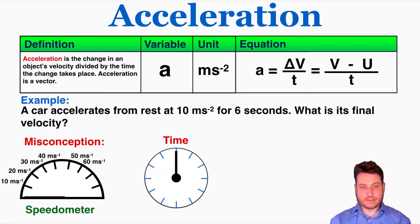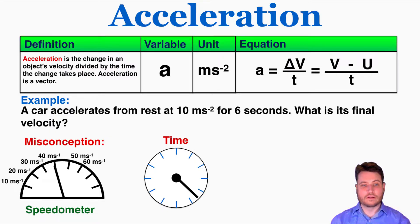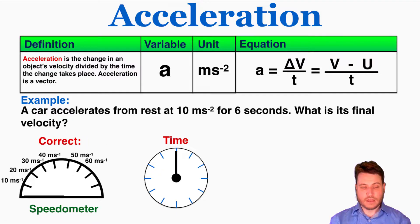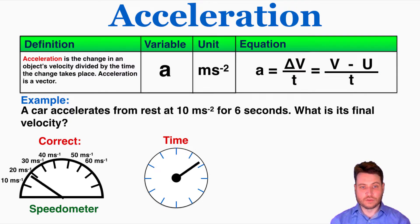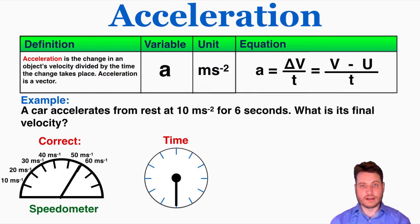The correct understanding is that it's one continuous increase in velocity. Using a speedometer to visualize: the misconception is that every second the object just jumps exactly 10 meters per second faster. Instead, what's actually happening is a continuous increase where every full second the velocity is exactly 10 meters per second faster — just one smooth, continuous increase.